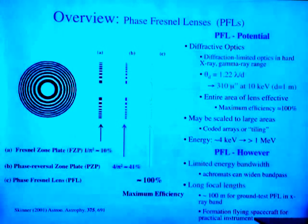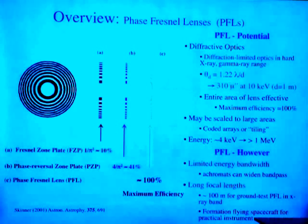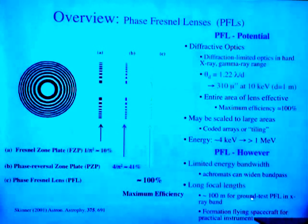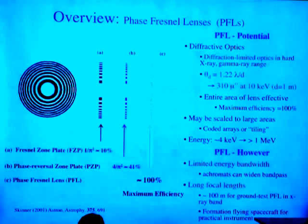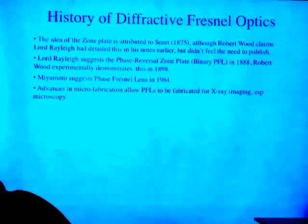Diffractive optics are very chromatic — their imaging potential only works over a very narrow energy band. I'll talk about achromats and show results that can widen that. One thing you can't get around is long focal lengths. This mechanical sample of the Fresnel lens I'm talking about has an effective focal length of about 113 meters, which allows ground testing. For larger lenses, the focal length is so large we'll need formation flying satellites.